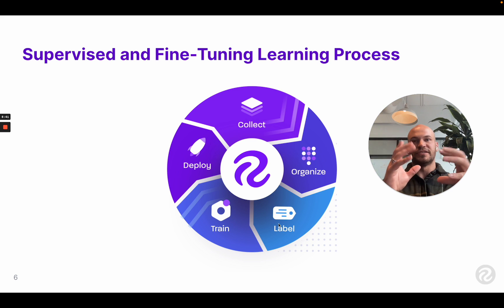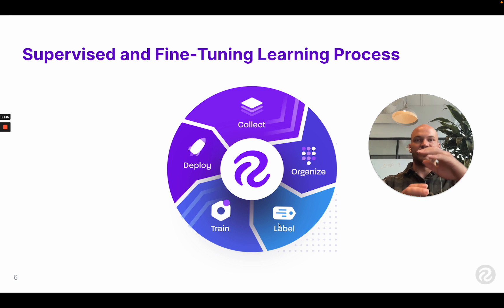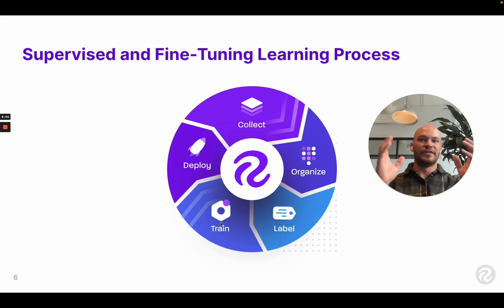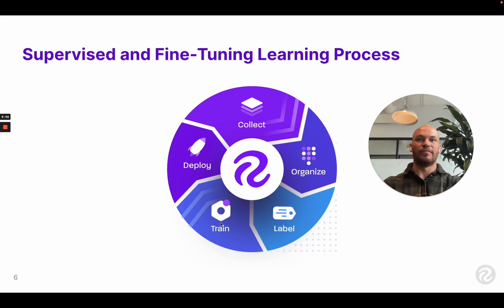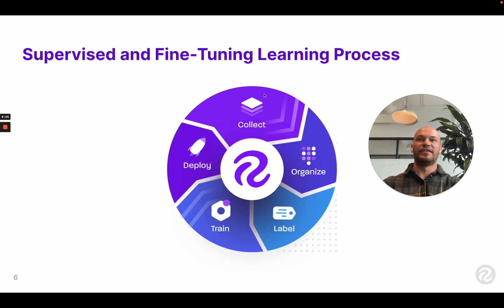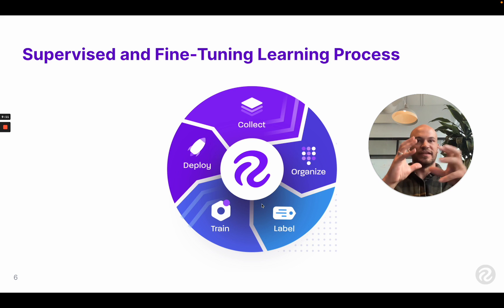You label those images and start to provide some supervision to the network through your own annotations, or if you have labelers working for you. Then you use those labels in combination with the broader data to train a model to be modeling the domain you've collected. Then you deploy your model — it goes live, it's actually in an application. And then you start that whole process back over again, because you find new edge cases and new little things, and then you update it.